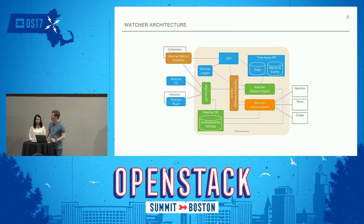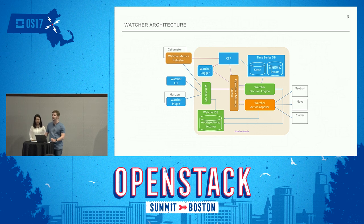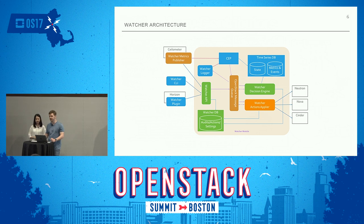We have the following architecture with three different services: Watcher API, Watcher Decision Engine, and Watcher Applier. We also have the Watcher Python client and a Watcher plugin for Horizon. We use metrics to generate action plans for our strategies, gathering them from different data sources like Monasca, Panko, and Ceilometer. We also have actions connected through the API to projects like Neutron and Nova.